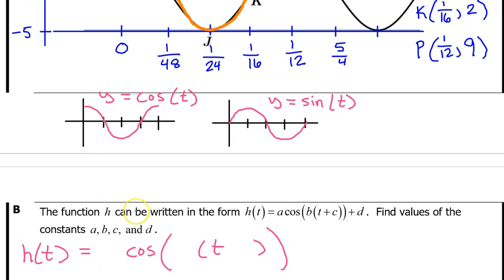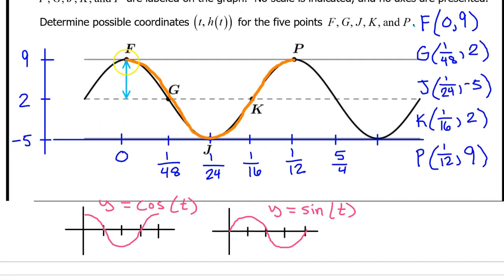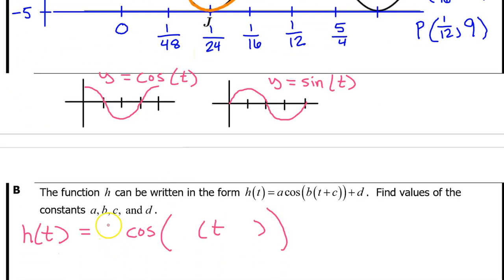Let's start with the a value, which is closely related to the amplitude, which is the distance between the maximum value and the middle value. 9 minus 2 is 7, so the amplitude is 7. The amplitude is always positive, but the a value is sometimes negative. Since this period that we have traced is oriented the exact same way as the parent function, then the a value will be positive. The a value will equal the amplitude. So the a value is 7.